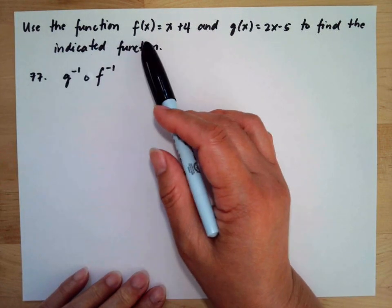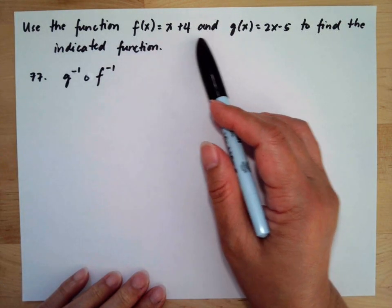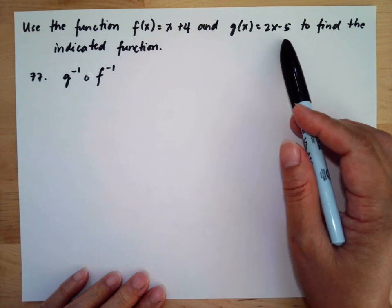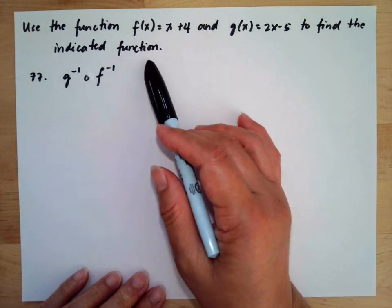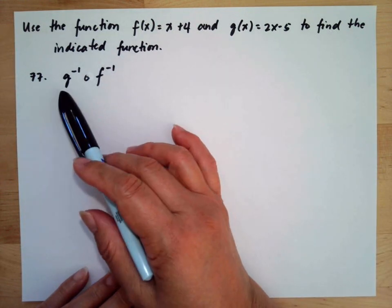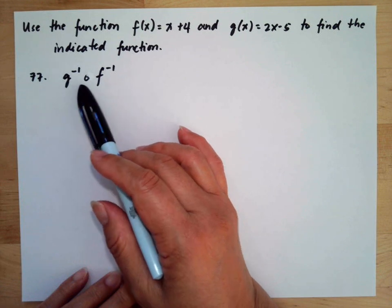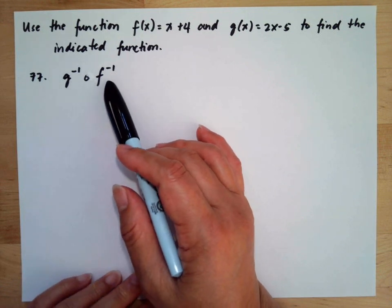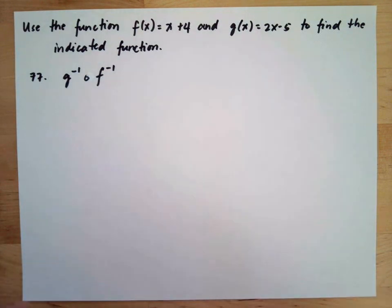Use the function f(x) = x + 4 and g(x) = 2x - 5 to find the indicated function. We have the inverse of g composed with the inverse of f.